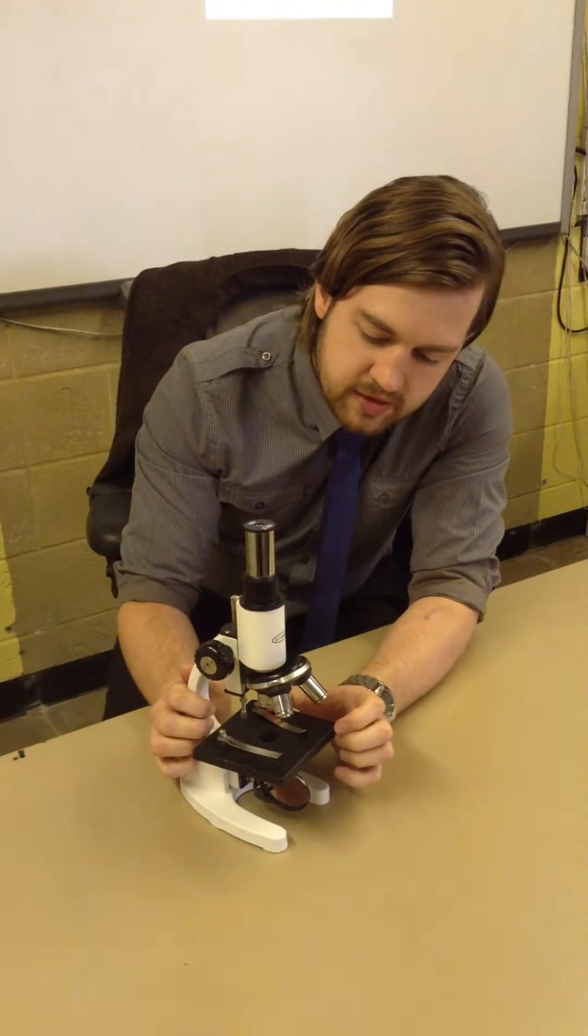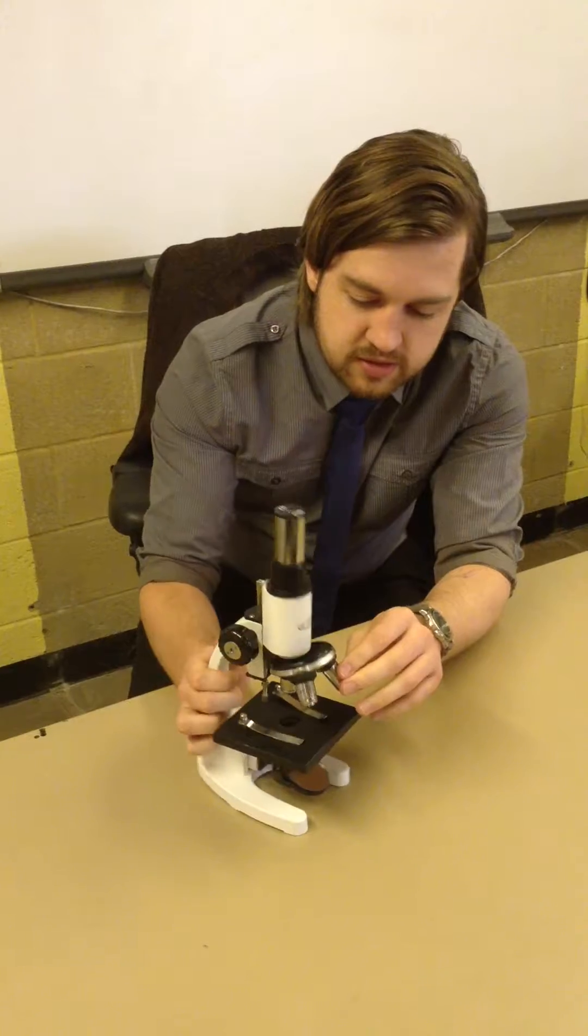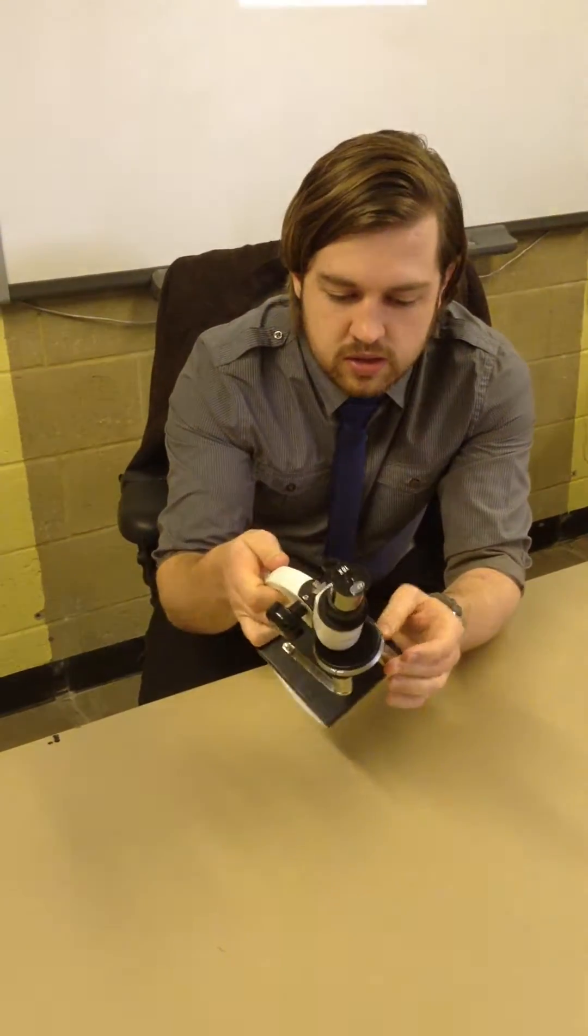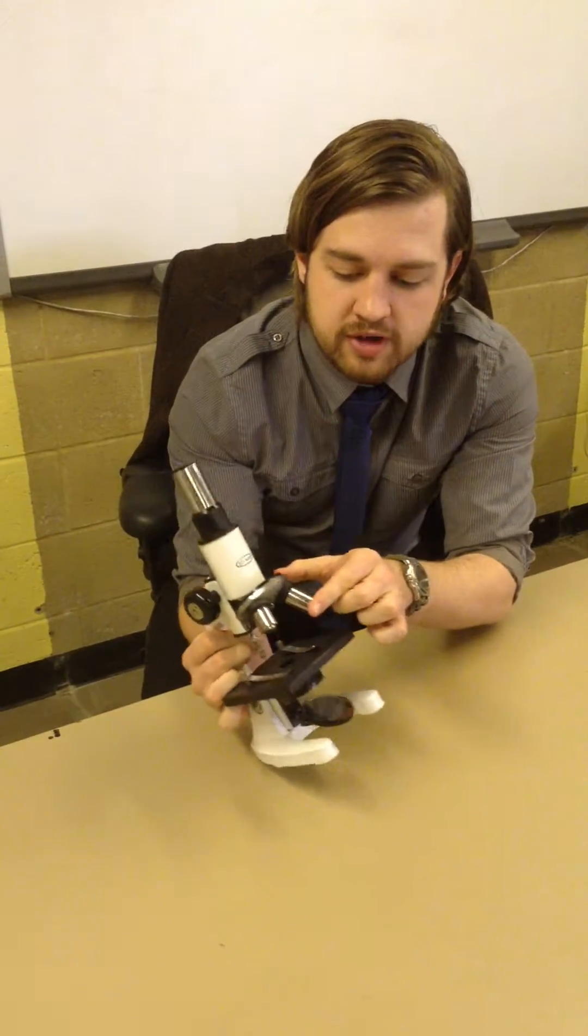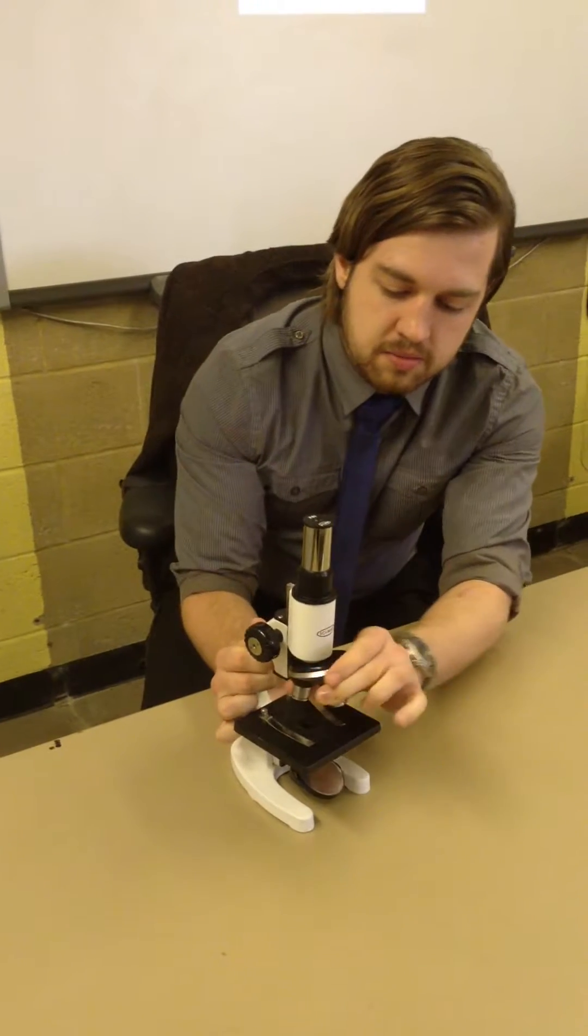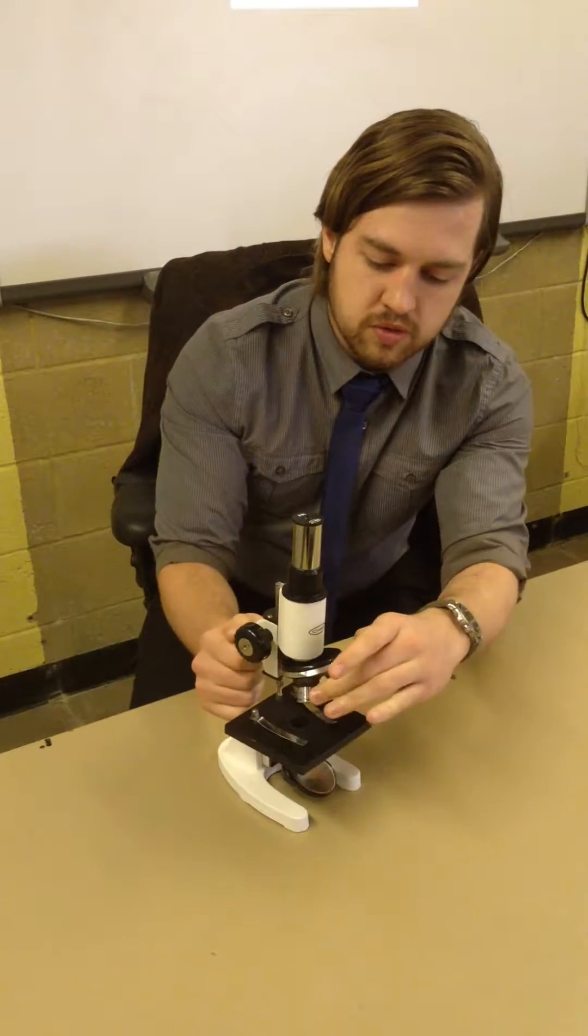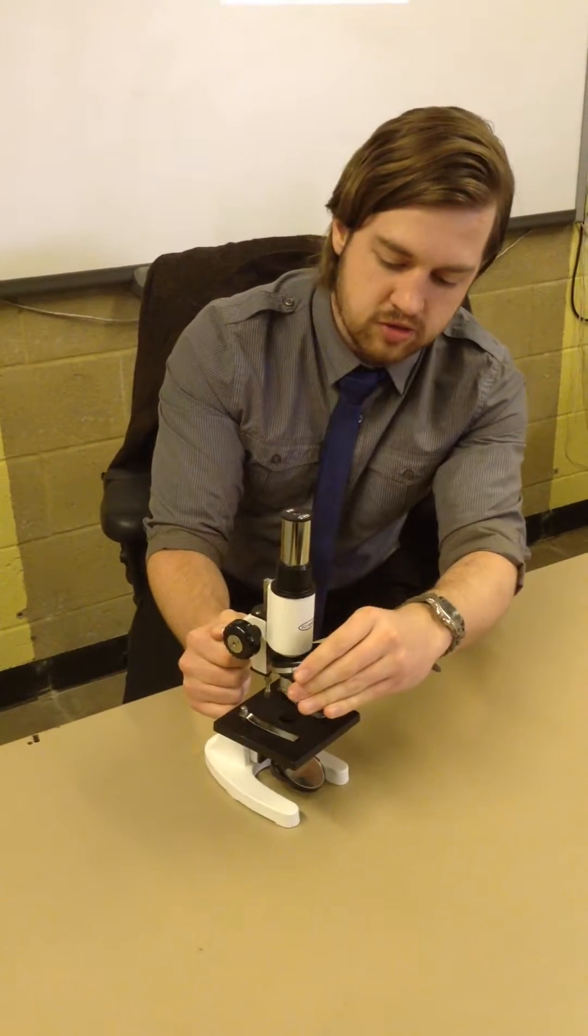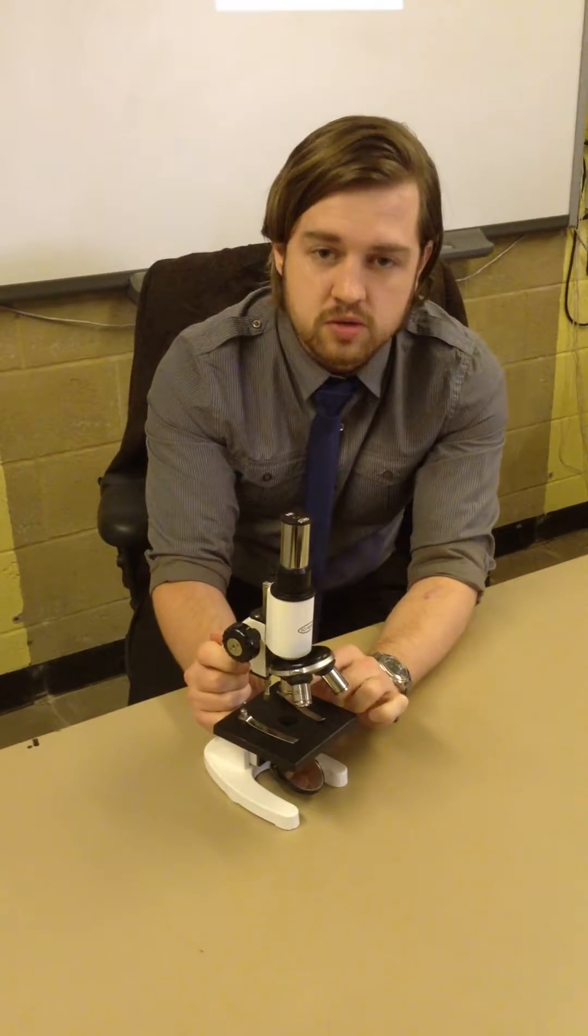After that, we then move on to our objective lenses. All the microscopes in the school have three objective lenses. There is a times 4, times 10, and a times 45 magnification. They move around in order for you to alter the magnification and increase the size of the image you were looking at. And it's very important that you always start on the smallest magnification.